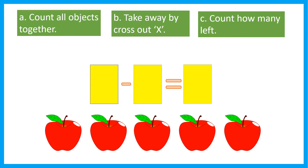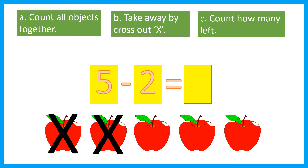Let's count all objects. Here we have 5 apples. And then we are going to take away 2 apples. When we take away, we cross the apples. 1, 2. Now let's count how many are left. 1, 2, 3. Three left.